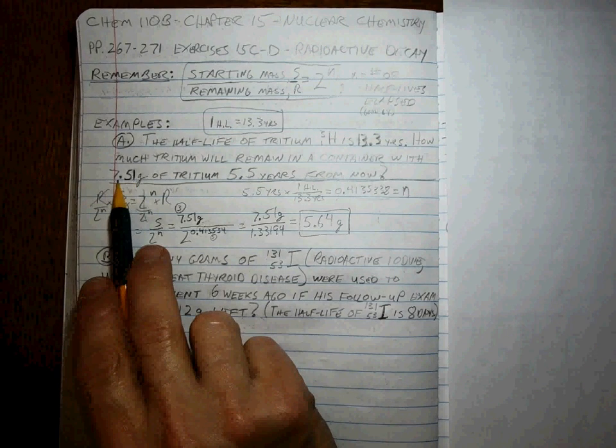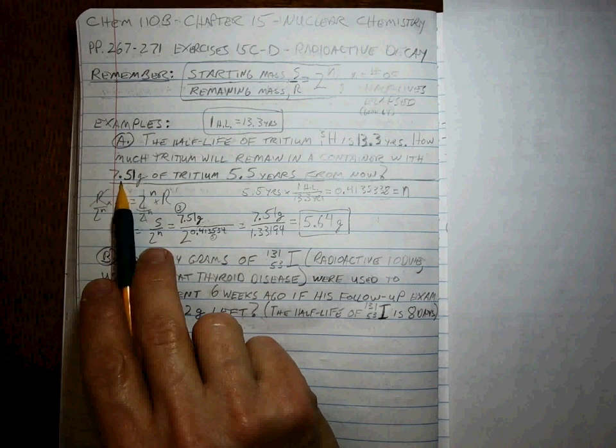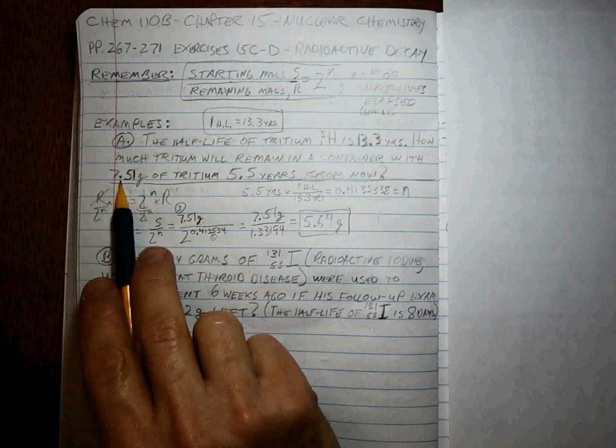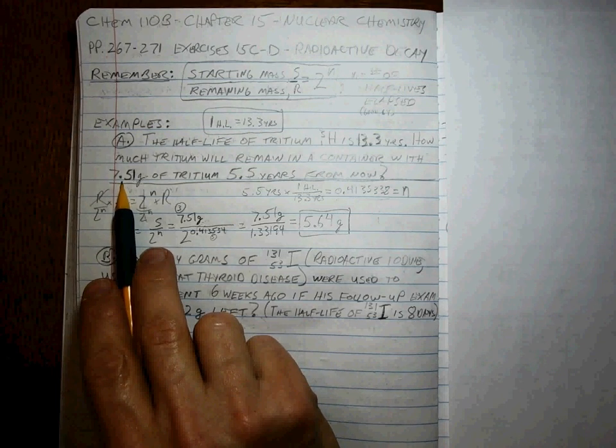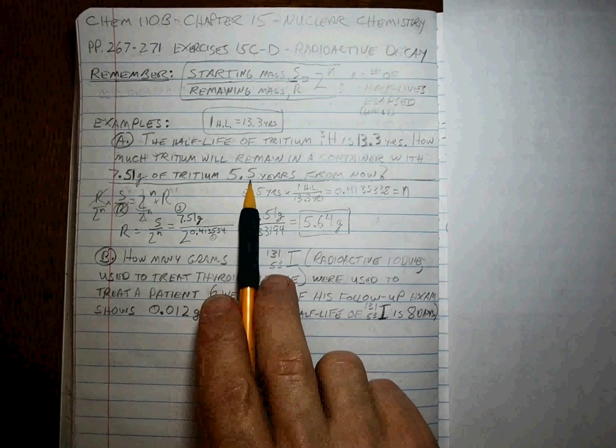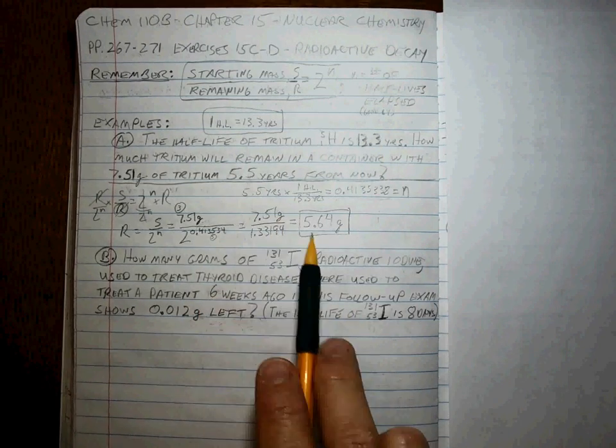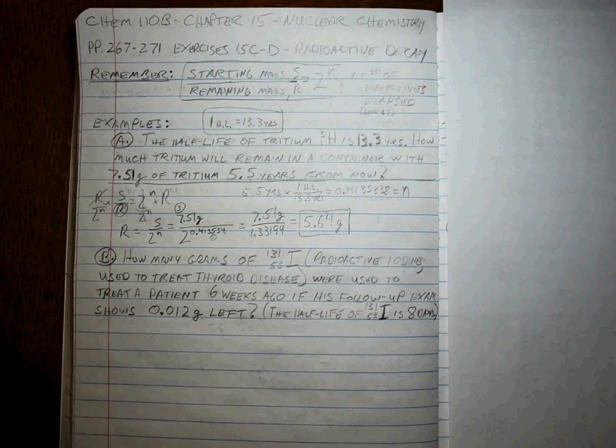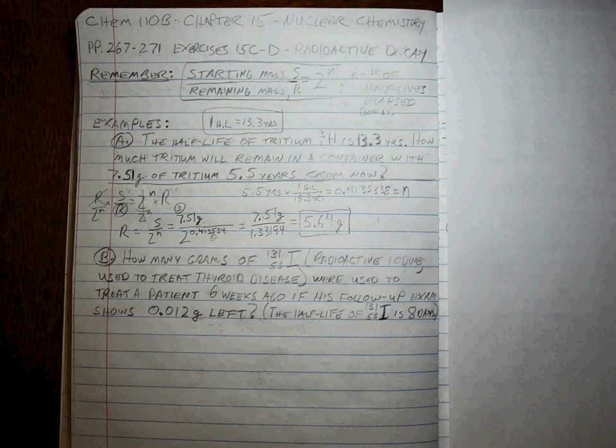Half of it will be left after 13.3. Half of 7.51 is, I don't know, maybe about 4, 3.5 or 3.75, something like that. But that's if 13.3 years went by, since only 5.5 should be bigger than that. So the number makes some sense, hopefully.